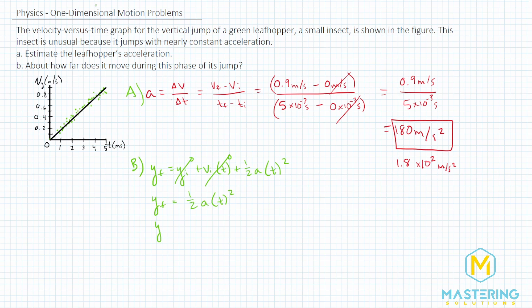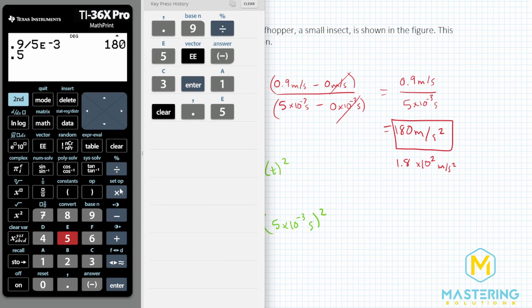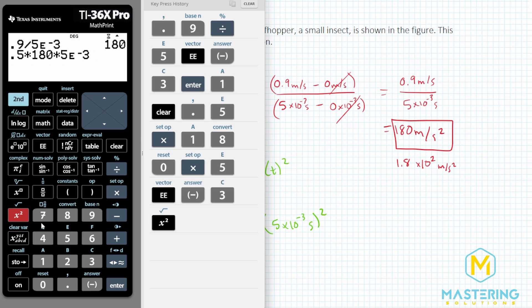So now when we plug in our numbers, we have y final is equal to one half of the acceleration, which we just solved for is 180 meters per second squared times the time, which we said was 5 times 10 to the negative 3 seconds. And we'll square that whole value. So we have 0.5 times 180 times 5 times 10 to the negative 3 squared.